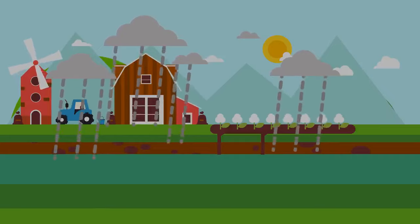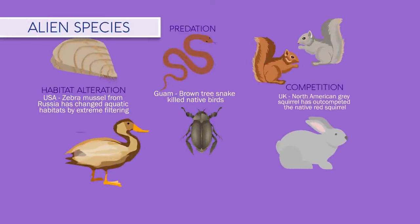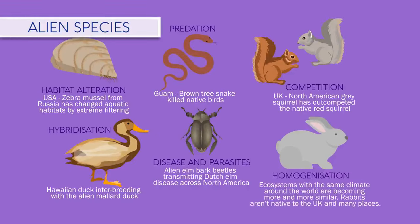A huge impact humans have had on planet Earth is the introduction of alien species to habitats. In fact, it is estimated that on any given day there are 3,000 species in transit aboard ocean-going vessels. Alien species can cause problems in a number of ways — pause the video and have a look.